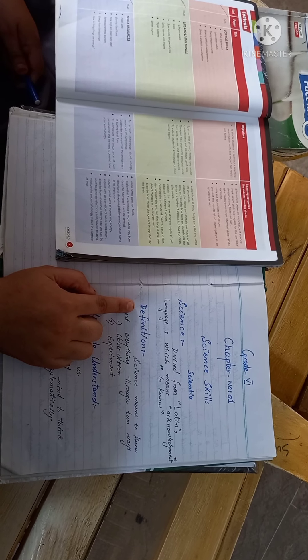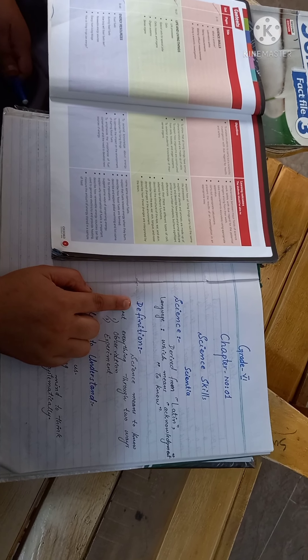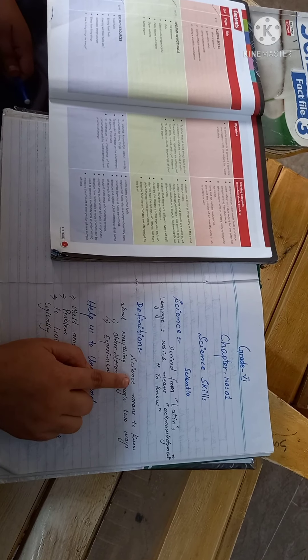Science is the definition of the book. If you are reading according to the book, it means that science is the word that we know about two things: observation.